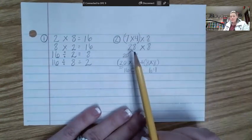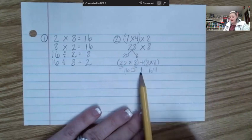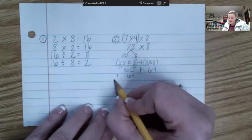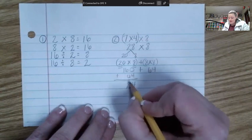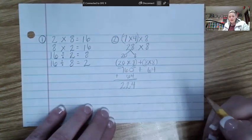So we break, break, break it apart. Pass, pass, pass it out. Multiply, then add. Multiply, then add. So we're going to add these together. So 160 plus 64. 0 plus 4 is 4. 6 plus 6 is 12. Put down a 2 and carry the 1. 1 plus 1 is 2. 224.